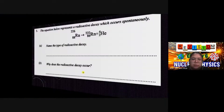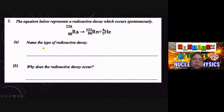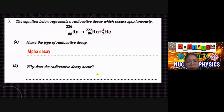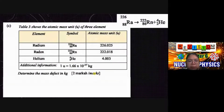Question three shows an alpha decay equation where radium produces helium — so this is alpha decay. Why does radioactive decay occur? Same answer: because the nucleus is unstable. It wants to become more stable, so the radioactive decay occurs. When the question asks why decay happens, answer: because the nucleus is unstable, or because it wants to become more stable.